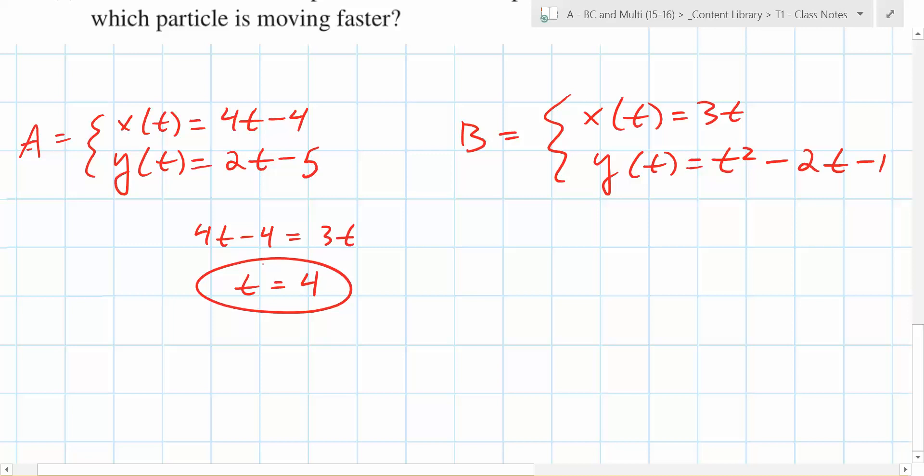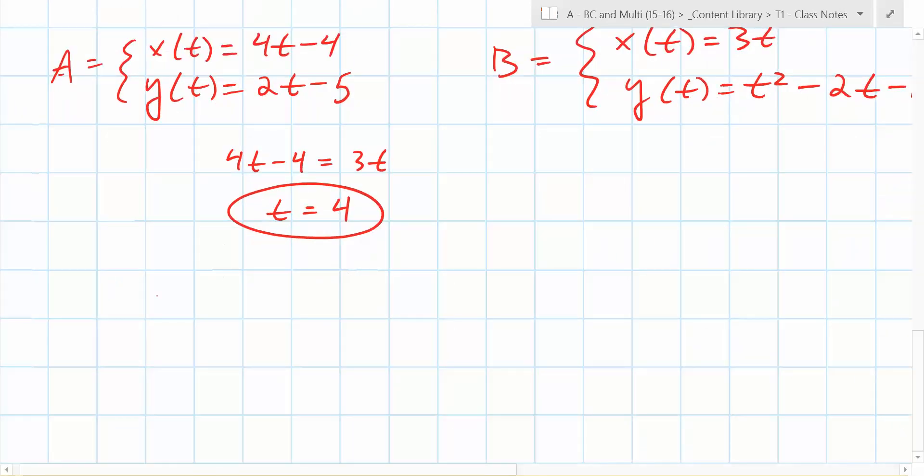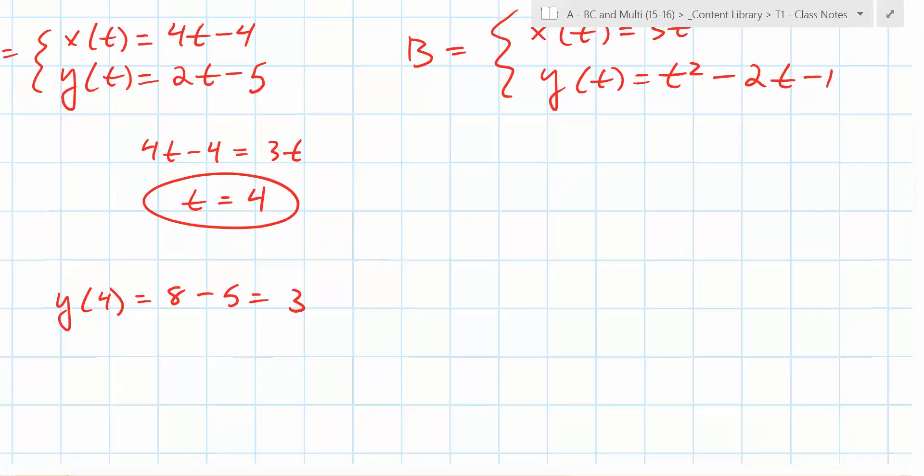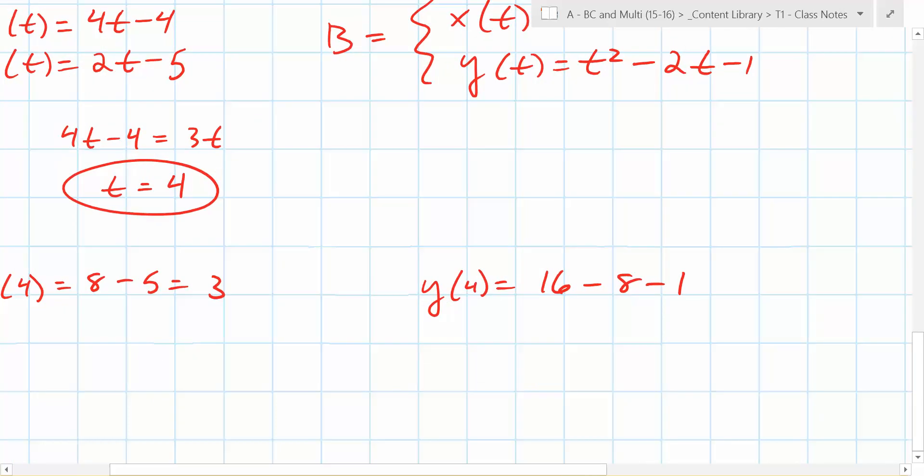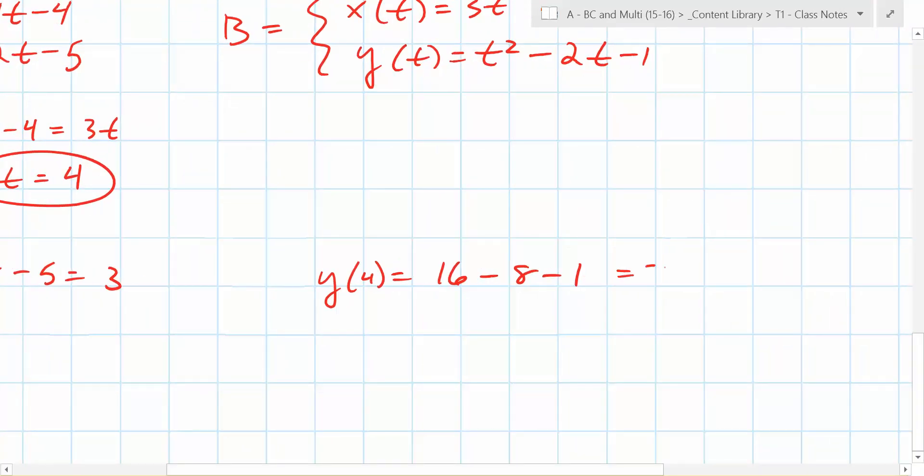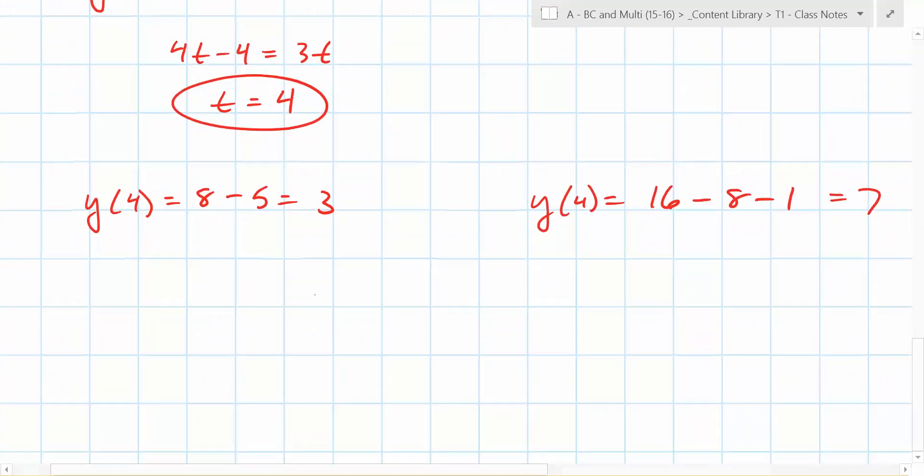So what should you do with that time equals 4? Plug it into y's. Plug it into y's, right? So y of t right here is going to, so not y of t, y of what? 4. 4 is going to be 8 minus 5, which is 3. And over here you have y of 4 is 16 minus 8 minus 1. Is that correct? Yeah. So you end up with what? 7. Do they ever collide? No. No collision. Nice. Awesome.